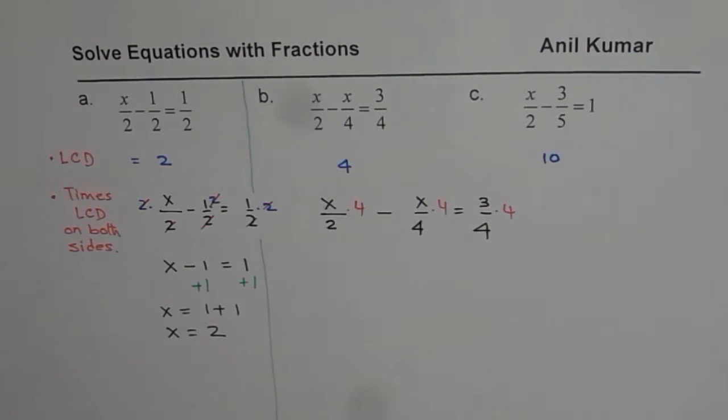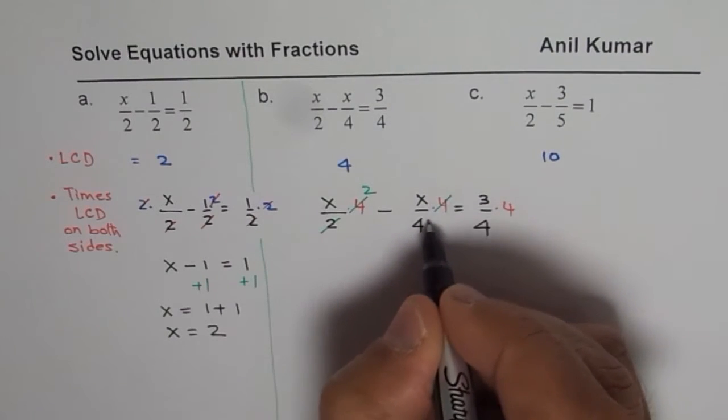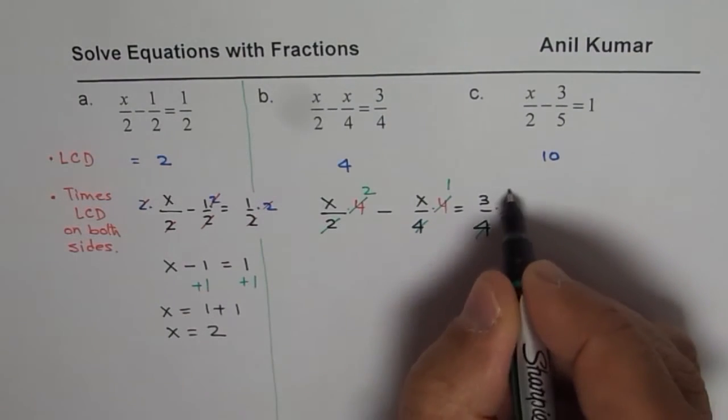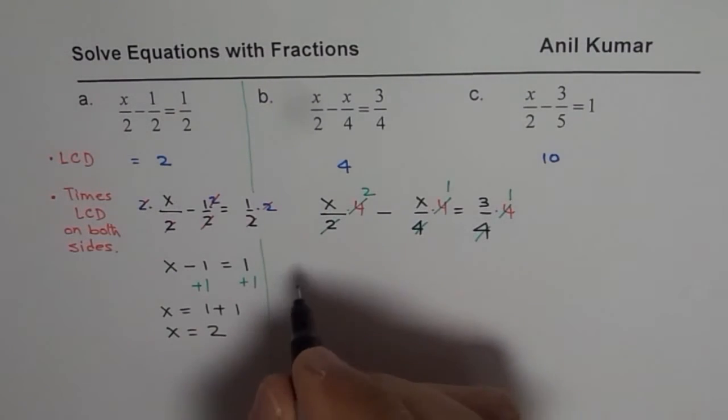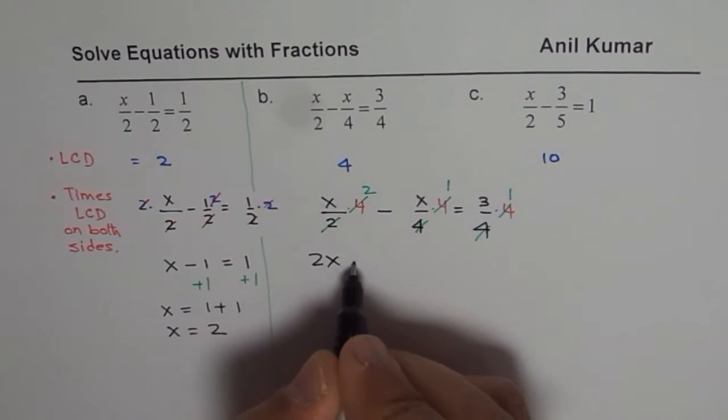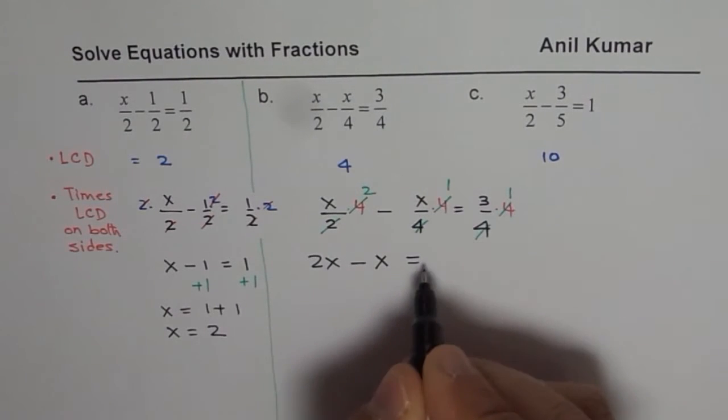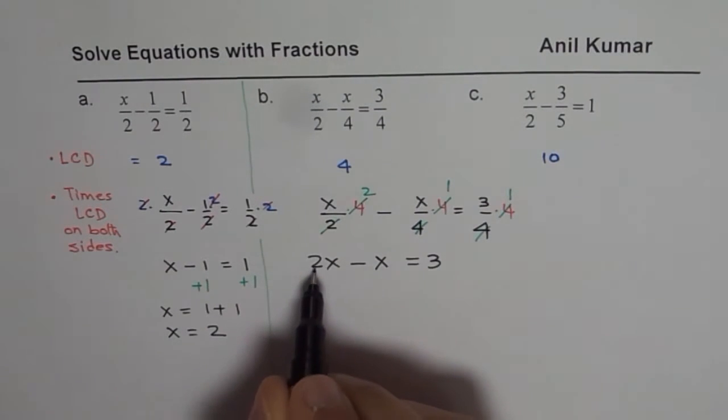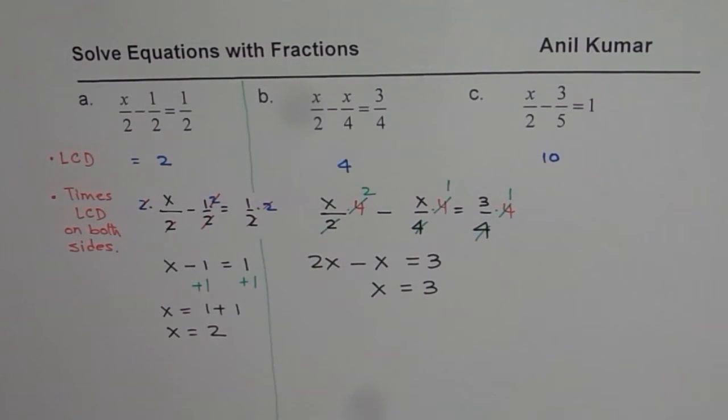But I recommend to simplify at this stage. It goes 2 times. 4 goes 1 time. This is 1 time. Now, you write down your equation. It is 2 times x. So we have 2 times x minus 1 times x, which is x, equals to 3. Now, 2 times x minus x is x. So you get x equals to 3. So that is how you should be solving such equations.